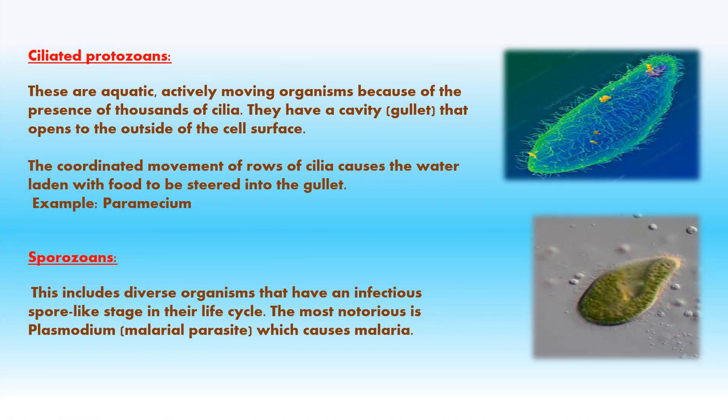Ciliate protozoans have a characteristic shape; they are all aquatic, actively moving organisms having cilia all over their body. They have an oral groove that leads into a cavity called the gullet. The coordinated movement of rows of cilia causes water laden with food to be steered into the gullet. Food is digested in the food vacuole and undigested waste is thrown out from the anal pore. Example: Paramecium.